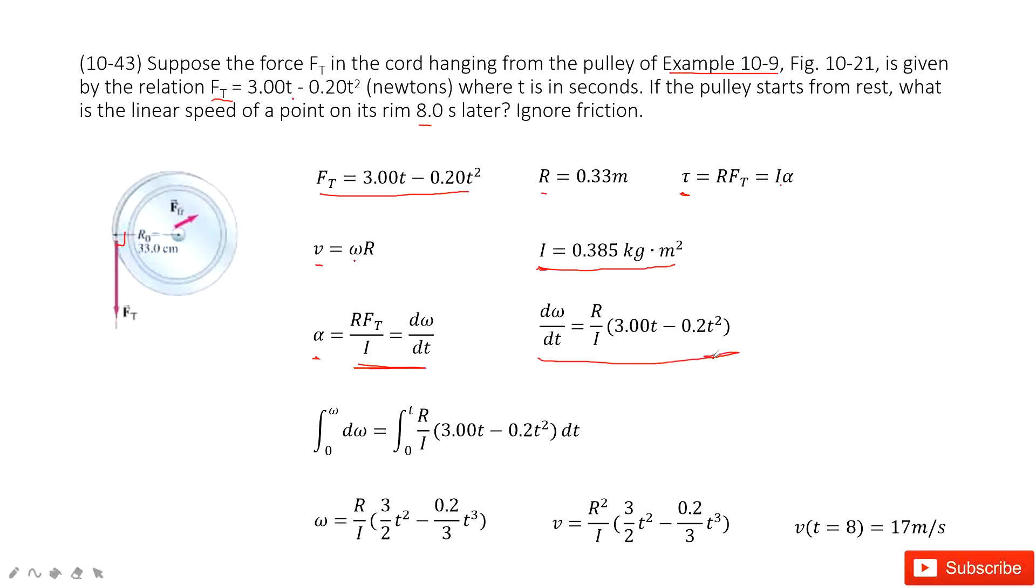This function is very important. Why? Because we can do the integral at both sides. Find the function omega with t. We do the integral with omega from 0 to omega and t from 0 to t. And then we get this function.